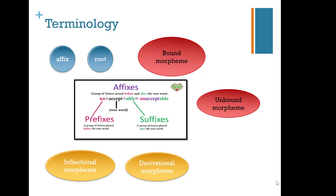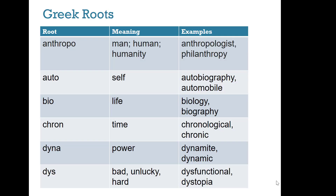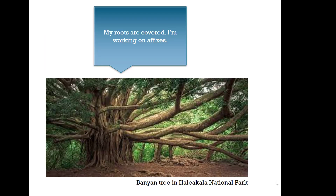Some terminology is important for morphological awareness. A root word — like 'accept' in 'unacceptable' — and affixes such as the prefix 'un-' and the suffix '-able' are two types of morphemes. We have bound and free (unbound) morphemes, and the unbound category includes inflectional and derivational morphemes. We begin instruction on morphological awareness by knowing our roots first. A common Greek root is 'bio,' meaning life, heard in 'biology' and 'biography.' A common Latin root is 'cent,' meaning 100, heard in 'century' and 'percent.'